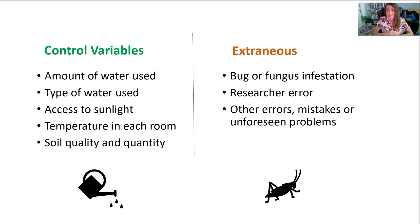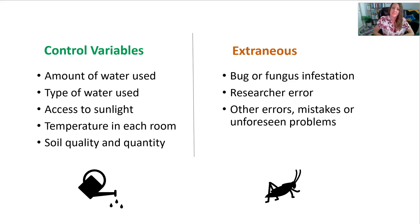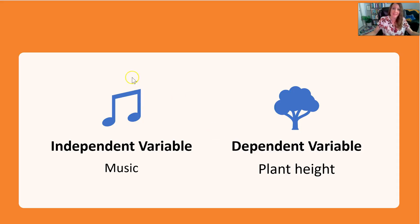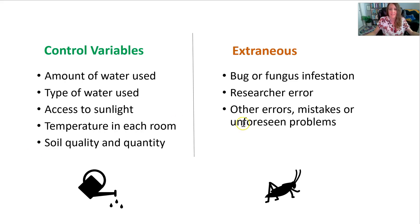You also have to keep in mind that extraneous variables could pop up that you didn't think about when designing the experiment. Maybe there's a bug, fungus, or aphid infestation on one plant. Or a shady research assistant lost the key to the second room and never watered that plant. Or the thermostat broke in one room making it hotter or colder, or a defective window seal made one room more humid. These are all alternative explanations to consider — can you really prove it was the independent variable that made the difference?